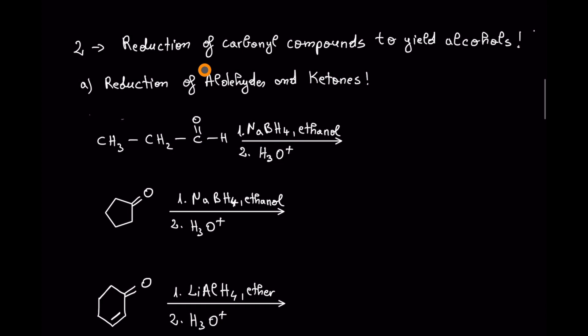The second way to prepare alcohols is by reduction of carbonyl compounds to yield alcohols. We are going to start with the reduction of aldehydes and ketones.